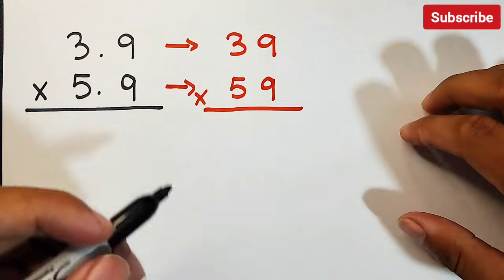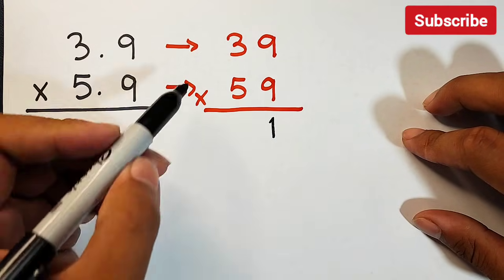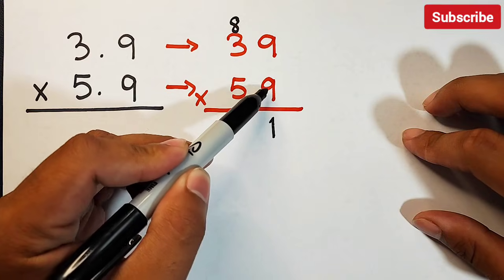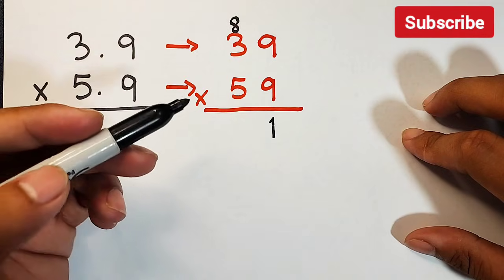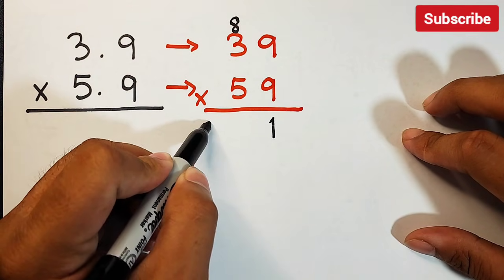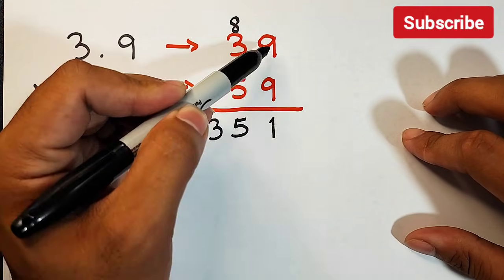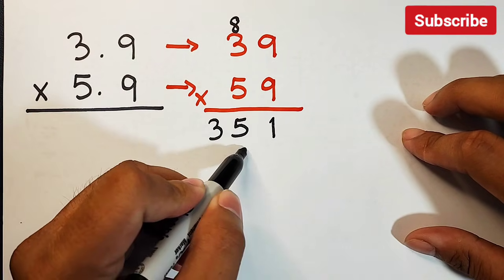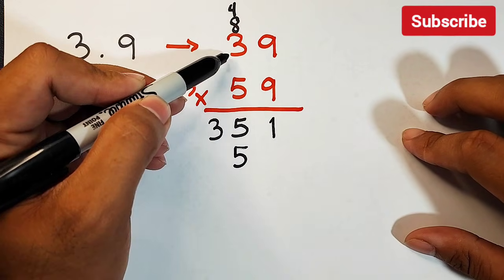Let's multiply step by step: 9 times 9 equals 81, so we put 1 and carry 8. Next, 9 times 3 is 27, plus 8 equals 35, so we write 35. Then, 5 times 9 equals 45, so we put 5 and carry 4.